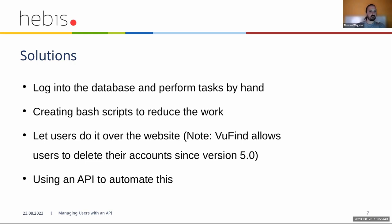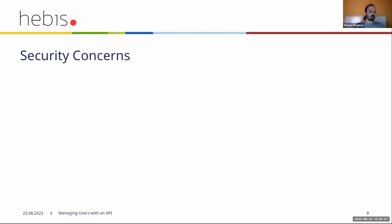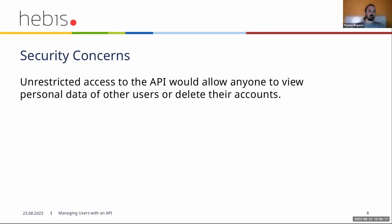The basic implementation shouldn't be a big problem, because deleting the user is already part of VuFind, and gathering all the information isn't a huge task either. But the main problem we see is security. If we have an API that can do this, it's really harmful if it were open to the public with no security at all, because anybody could use it to delete accounts or steal personal information.